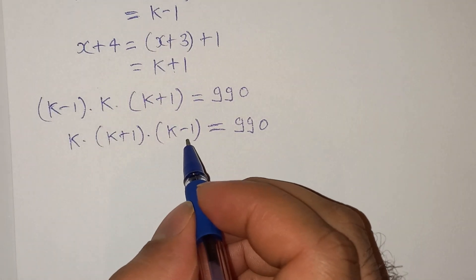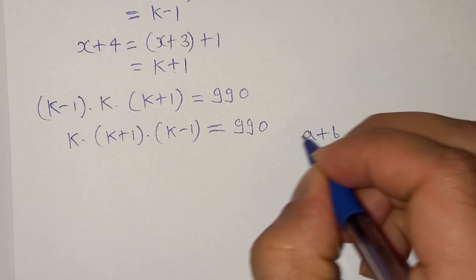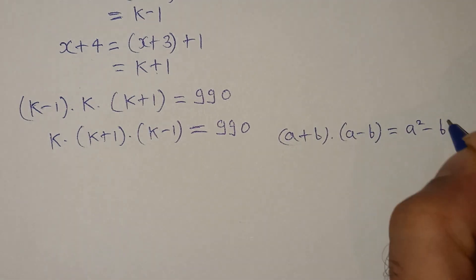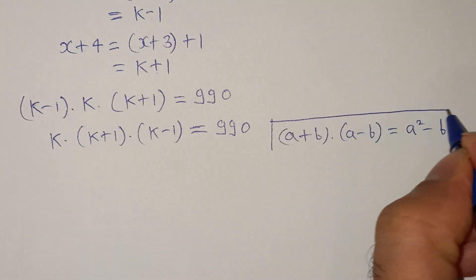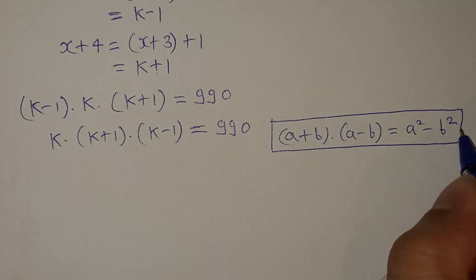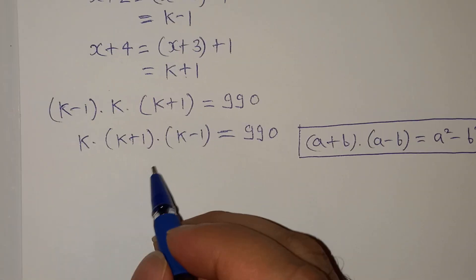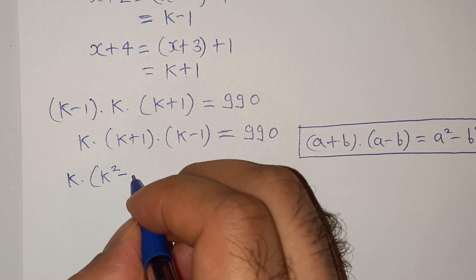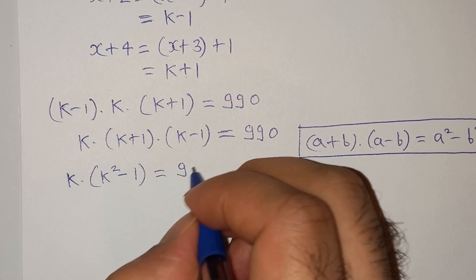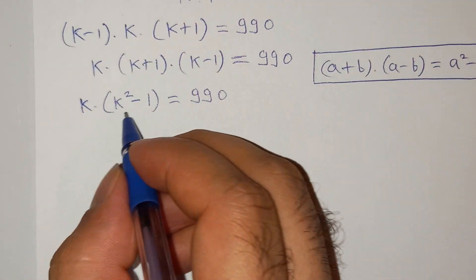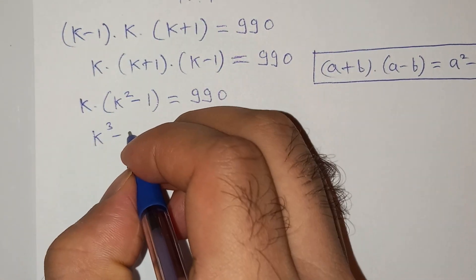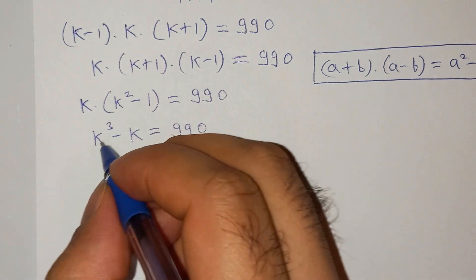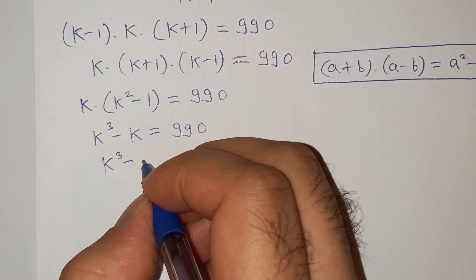Now we apply the formula (a+b)(a-b) = a² minus b². Applying it here, we get k multiplied by (k² minus 1) equals to 990. Opening the bracket, we have k cubed minus k equals to 990.